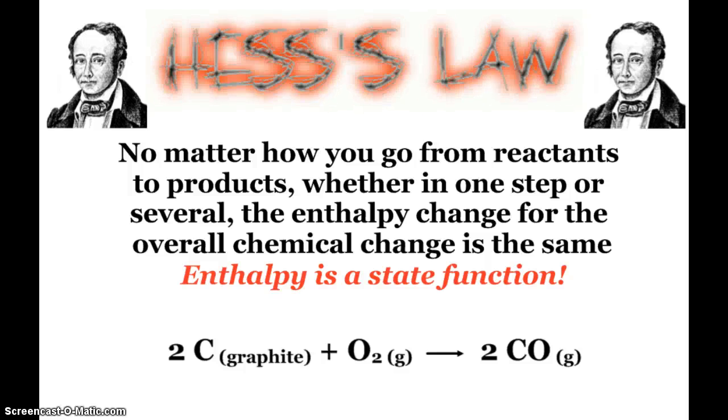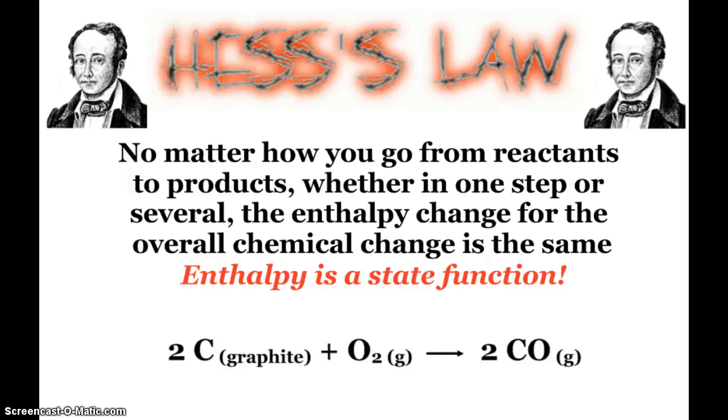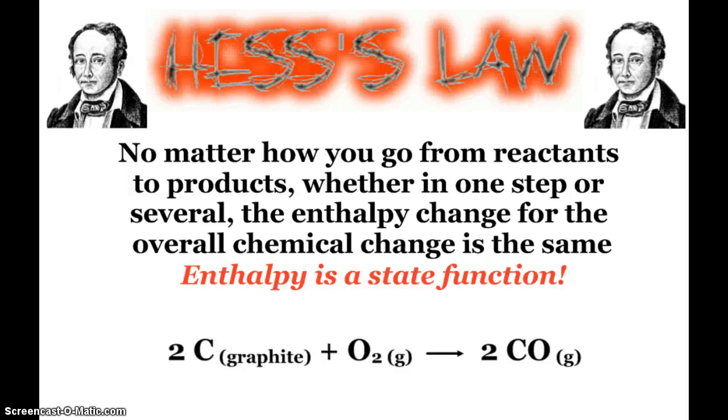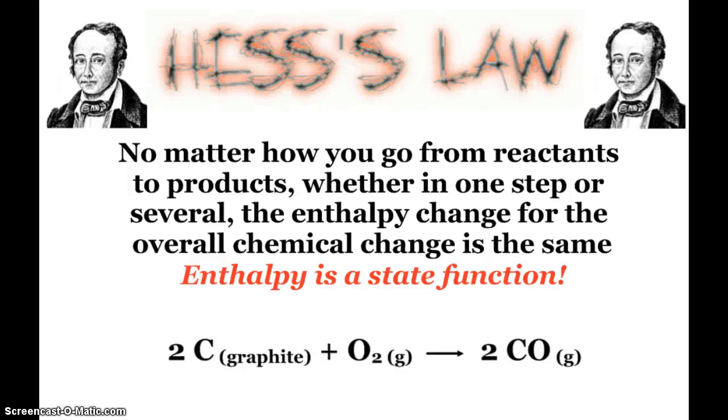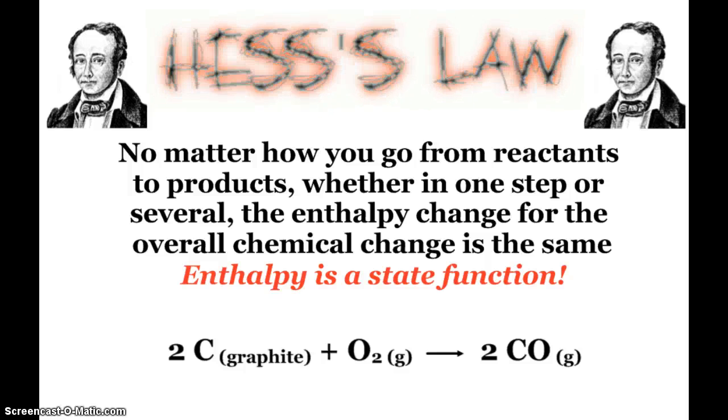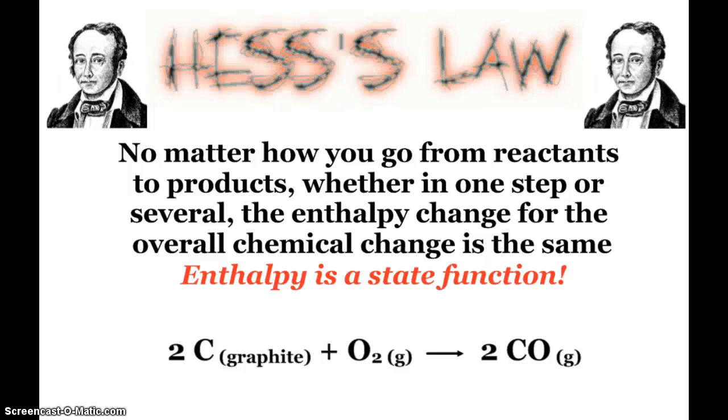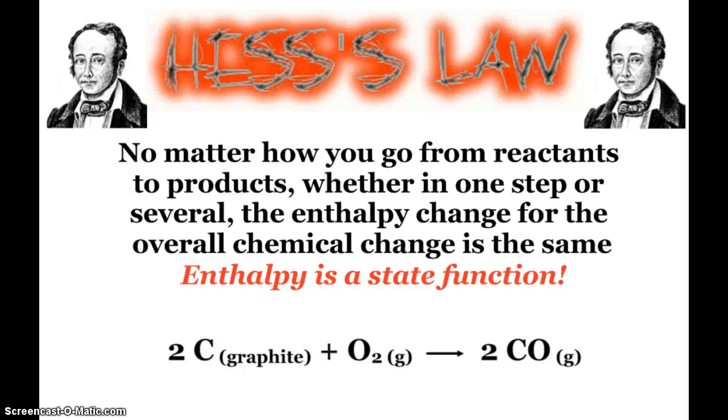So here we see a reaction, carbon graphite, solid carbon in the graphite form, plus oxygen gas making carbon monoxide. This reaction's enthalpy change is very hard to determine directly, because typically once carbon monoxide forms, it will react with oxygen that's present to form carbon dioxide.